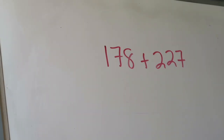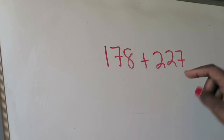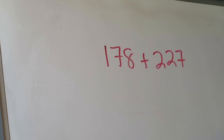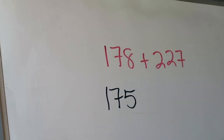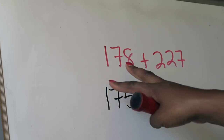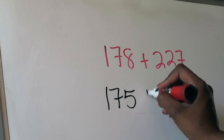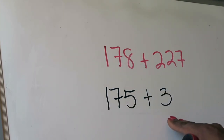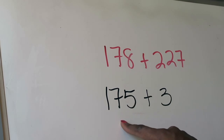In this example, we are going to be adding 178 plus 227, and I want to use compatible numbers — numbers that are nice and friendly with each other and work well together. I'm going to look at 178 first and ask myself: what's a nice clean number I can change that to so that it's easily added mentally. I know that 178 is very close to 175. So I'm going to pull 175 out of 178, recognizing that when I take 175 out, I still have another three, because 175 plus three gives me 178.